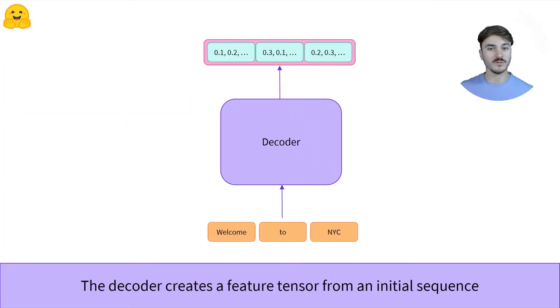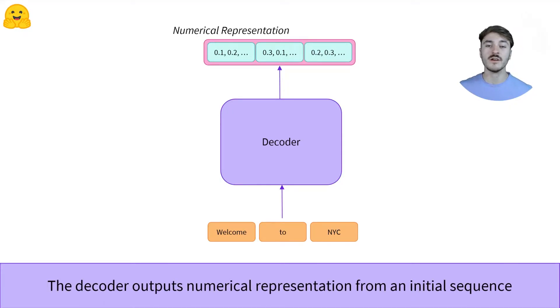We'll use a small example using three words. We pass them through the decoder. We retrieve a numerical representation for each word. Here for example, the decoder converts the three words welcome to NYC in these three sequences of numbers.